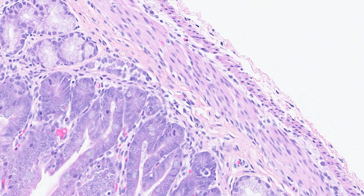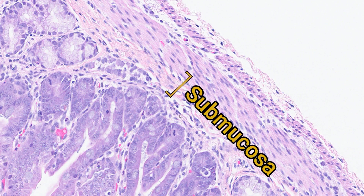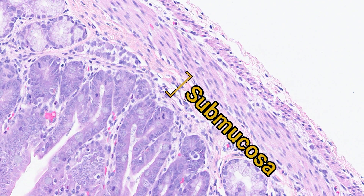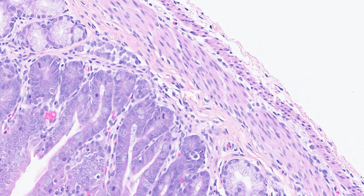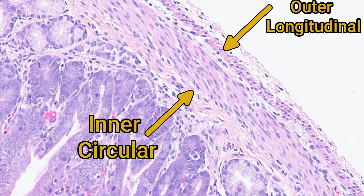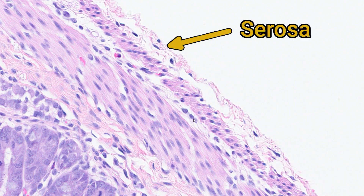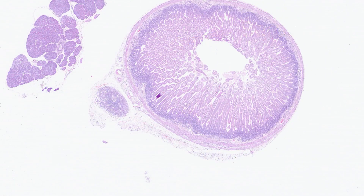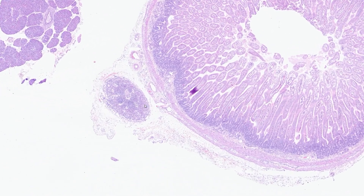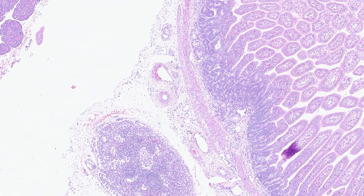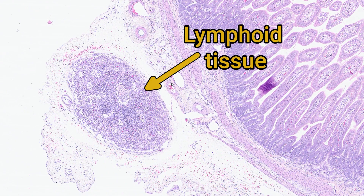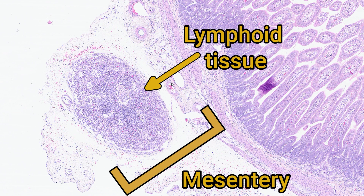All the connective tissue below the muscularis mucosa is the submucosa, where you'll find larger blood vessels, lymphatics, nerves, and ganglia. Next are the two layers of the muscularis externa: an inner circular layer and an outer longitudinal layer. Finally, the outermost layer is the serosa, composed of connective tissue and a mesothelial lining. Often at one border of the intestine you'll find the serosa expanded by larger blood vessels, lymphoid tissue, and adipose tissue — this is the mesentery, the connective tissue that suspends the intestine within the abdominal cavity.